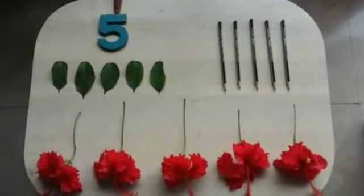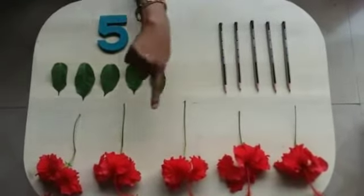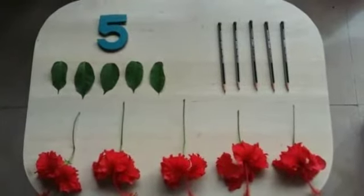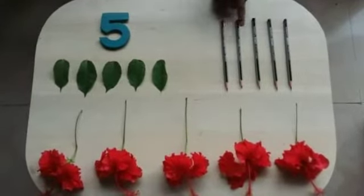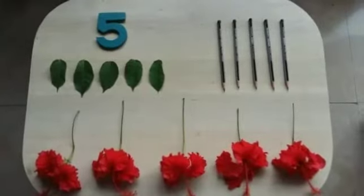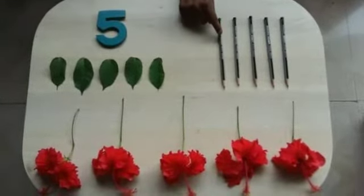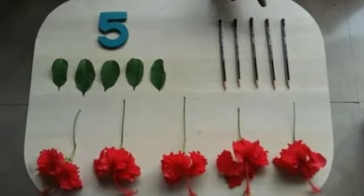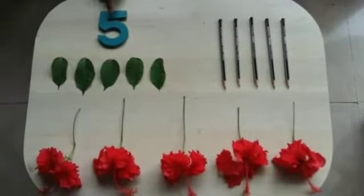Children, this is number 5 and here some objects are given and we are going to count these objects. What are these? Yes, pencils. Let us count: 1, 2, 3, 4, and 5. How many pencils? 5 pencils.